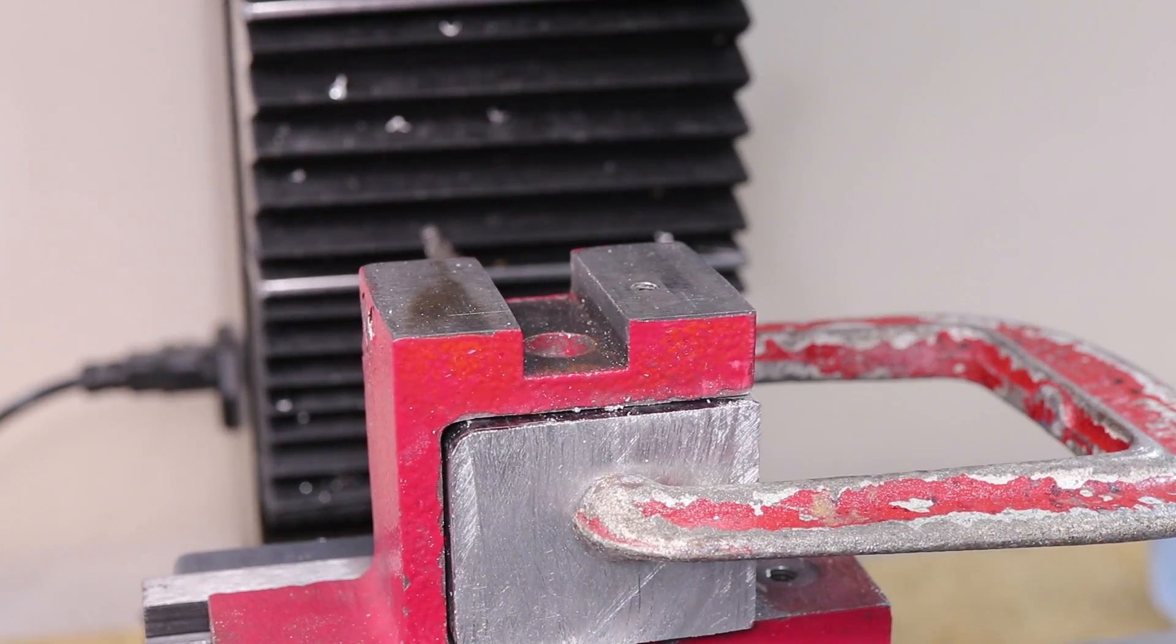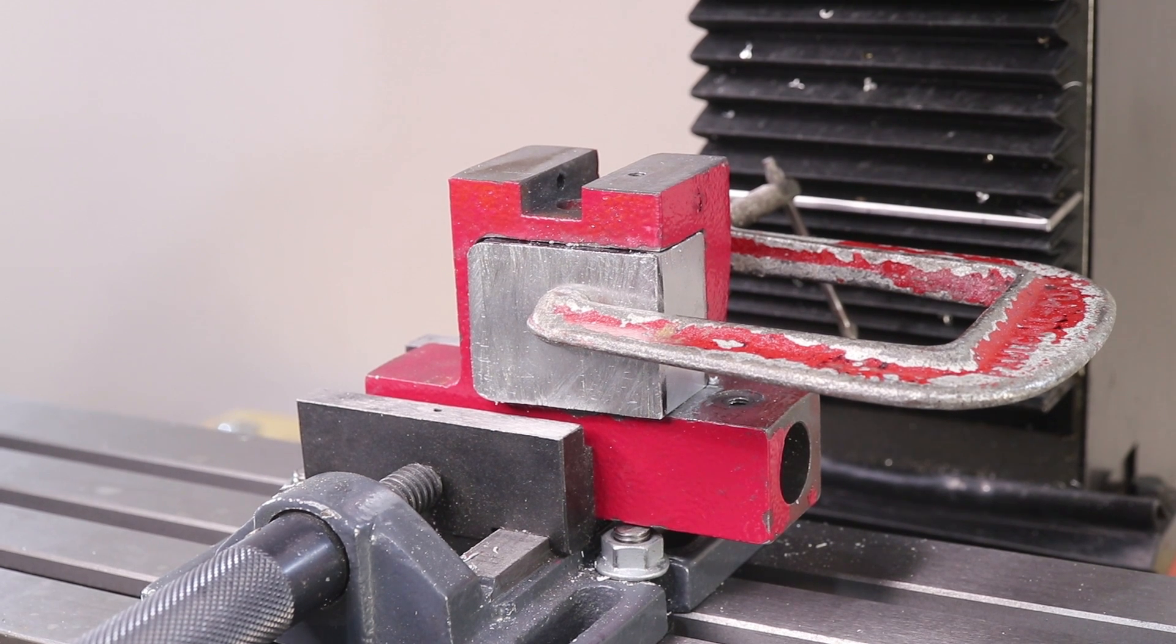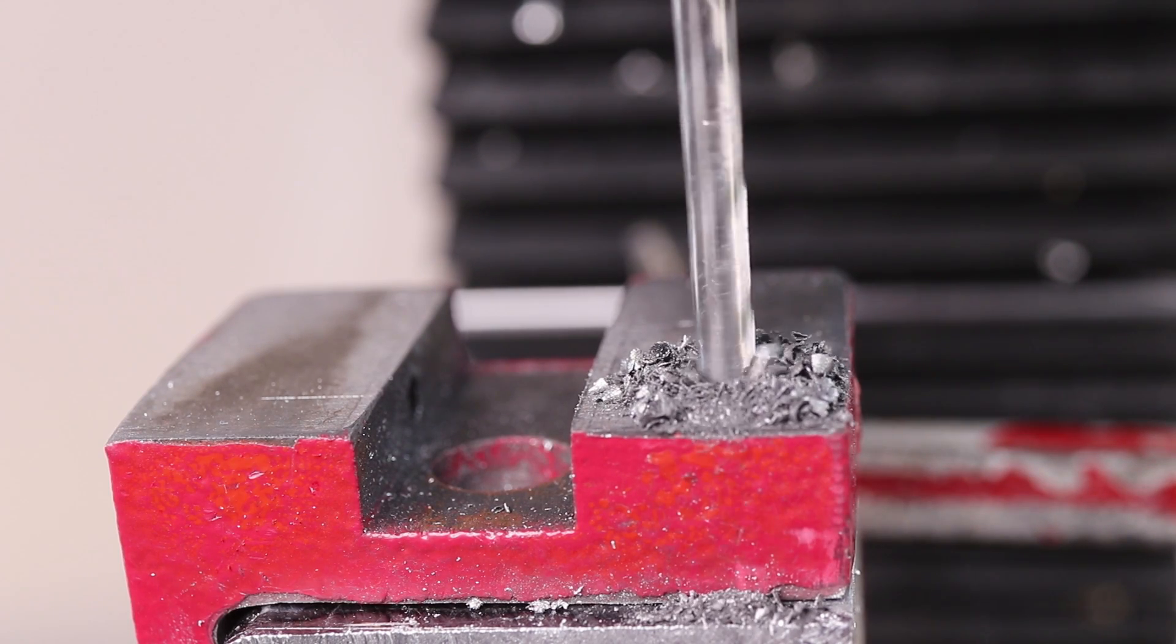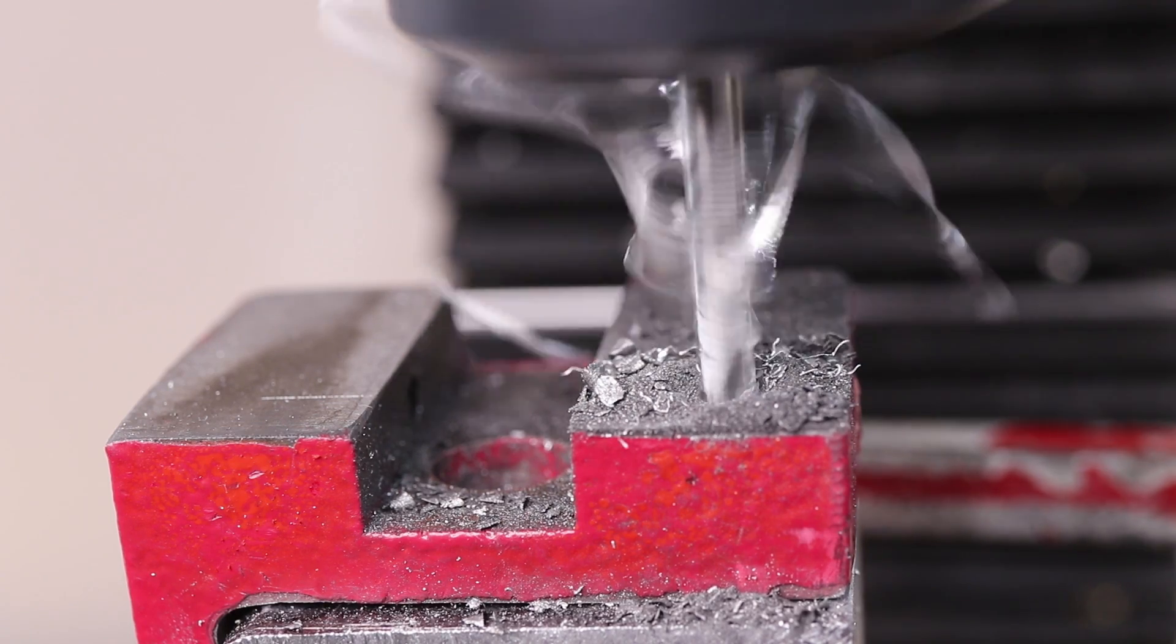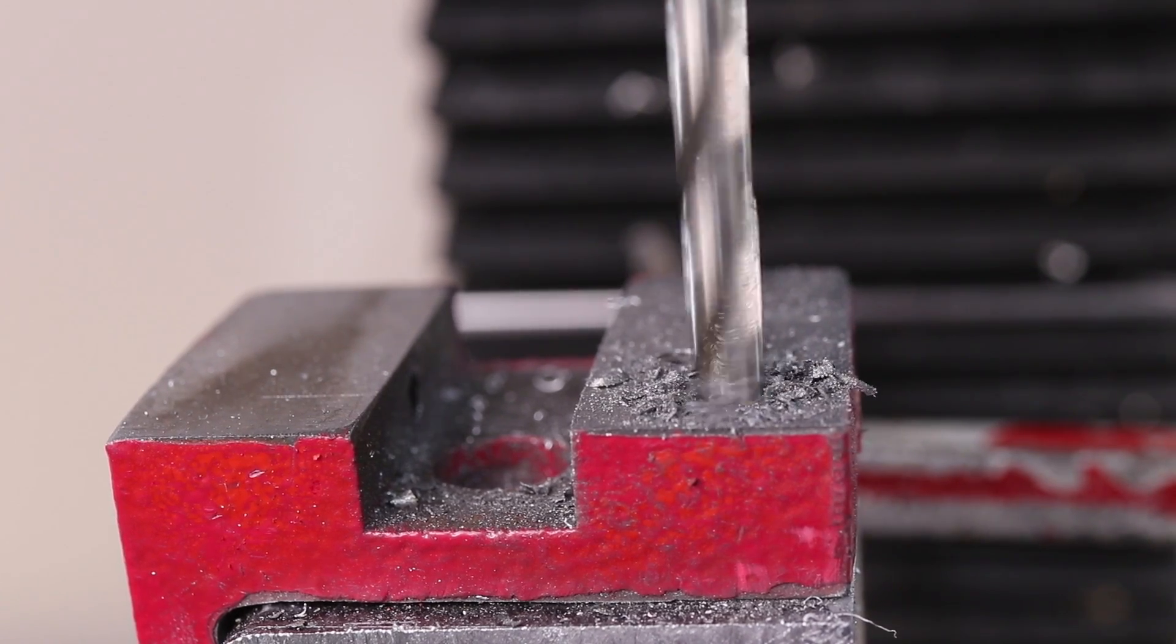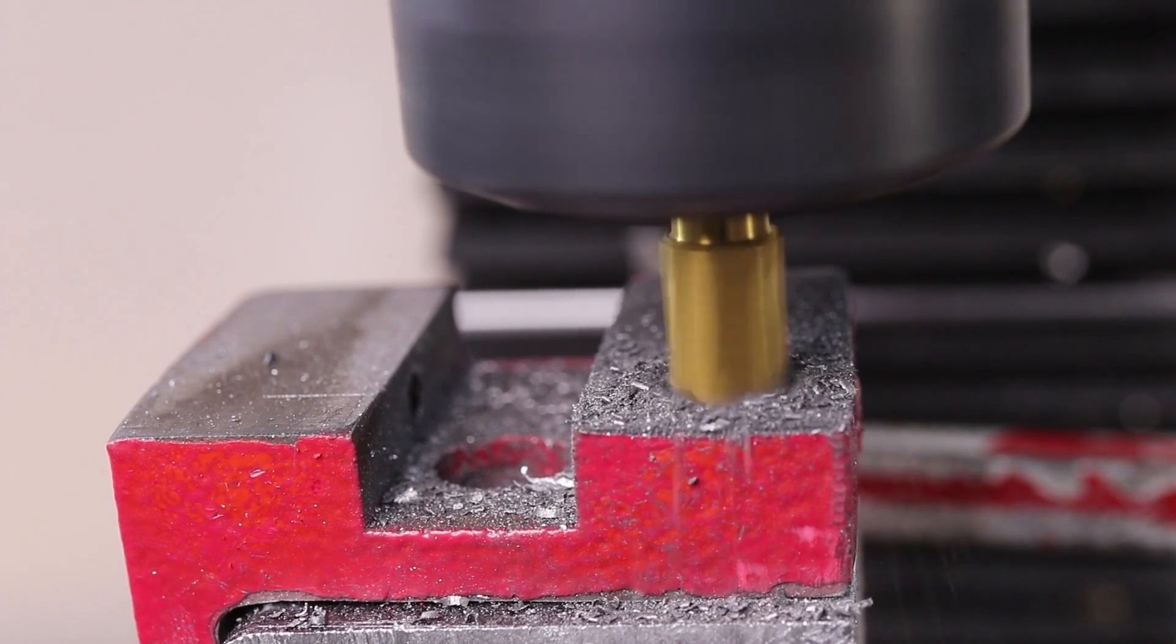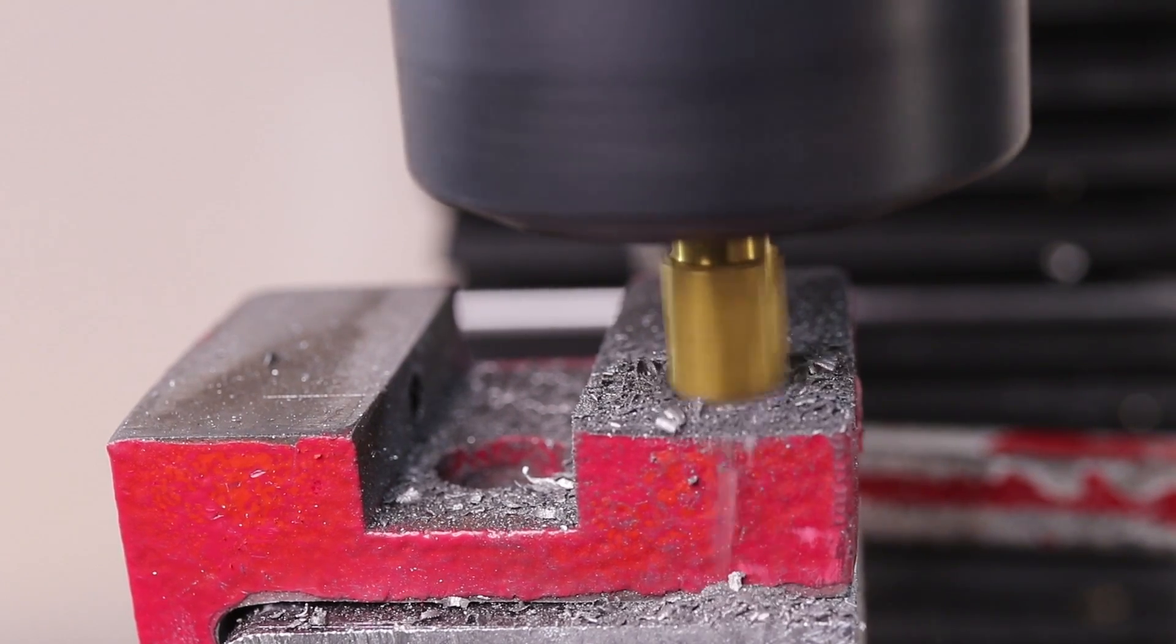Before we can face it I'll quickly drill two holes for screws that will hold the insert in place. I was recently given an M6 counterbore tool and this was the perfect opportunity to test it out. It cuts really nicely into the cast iron and leaves a really great finish.